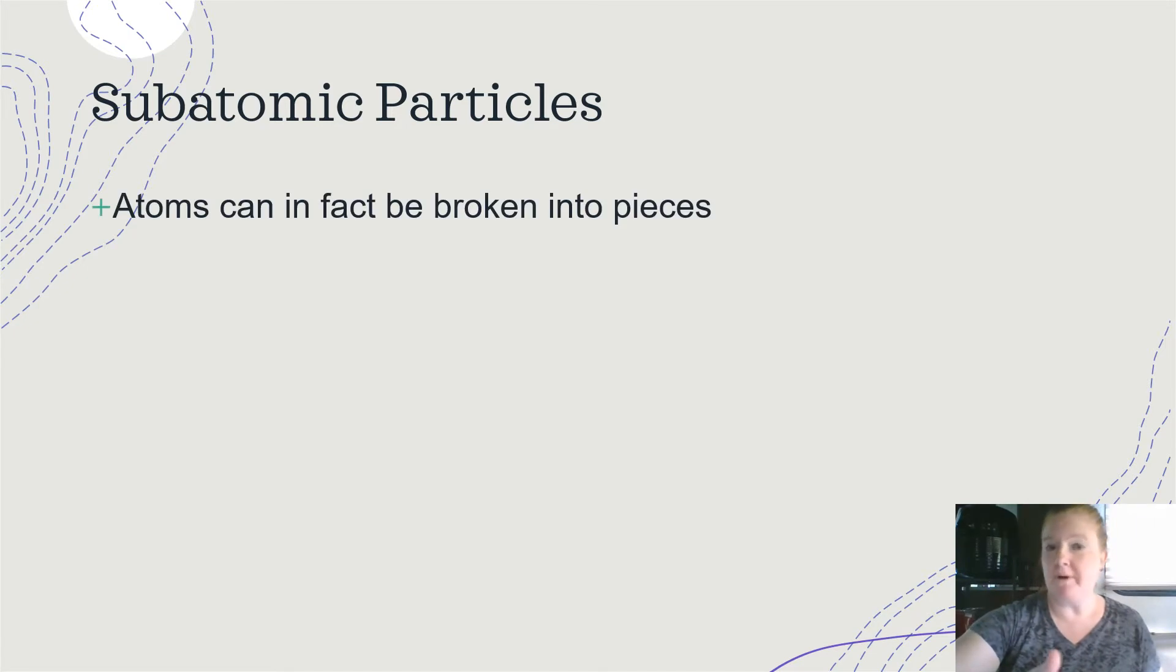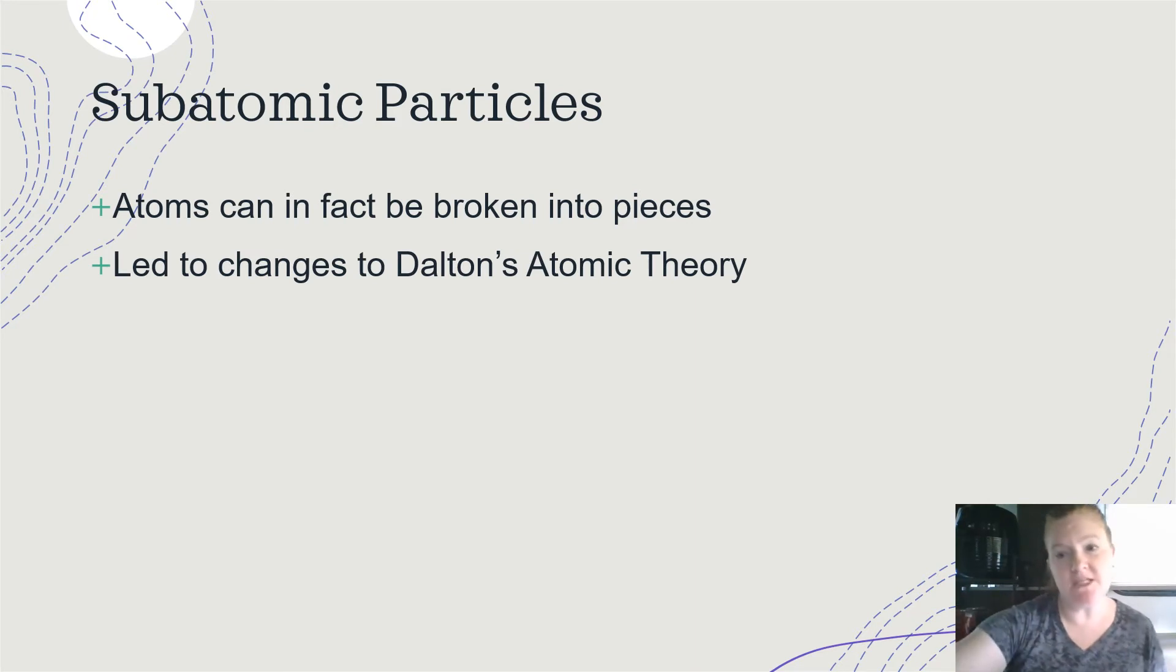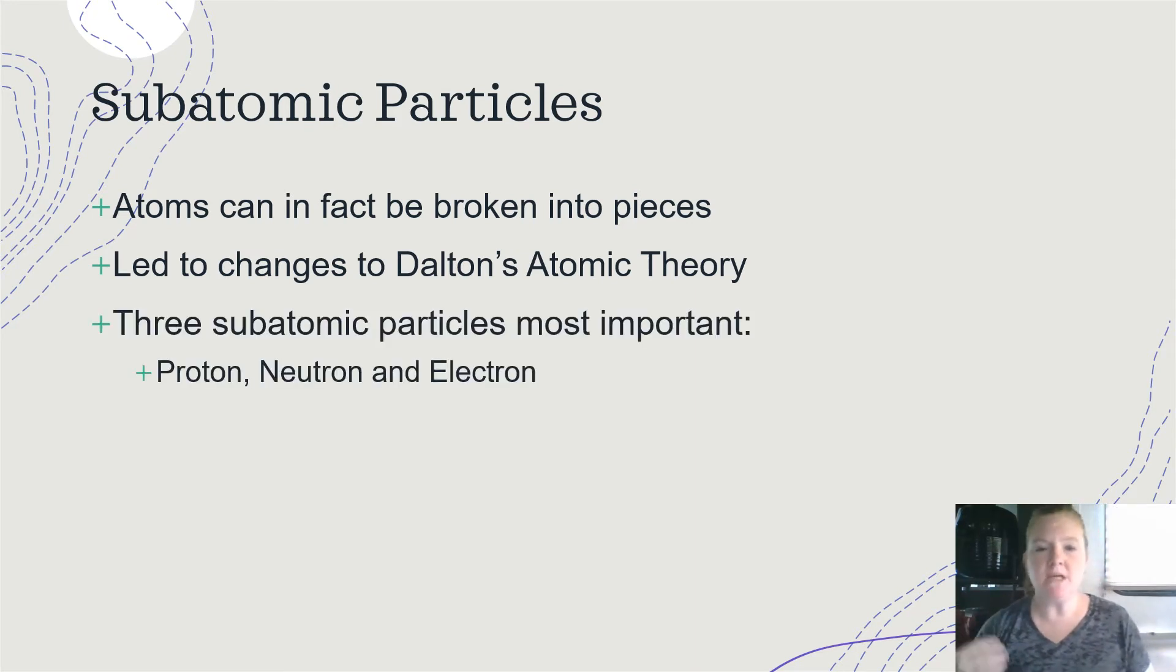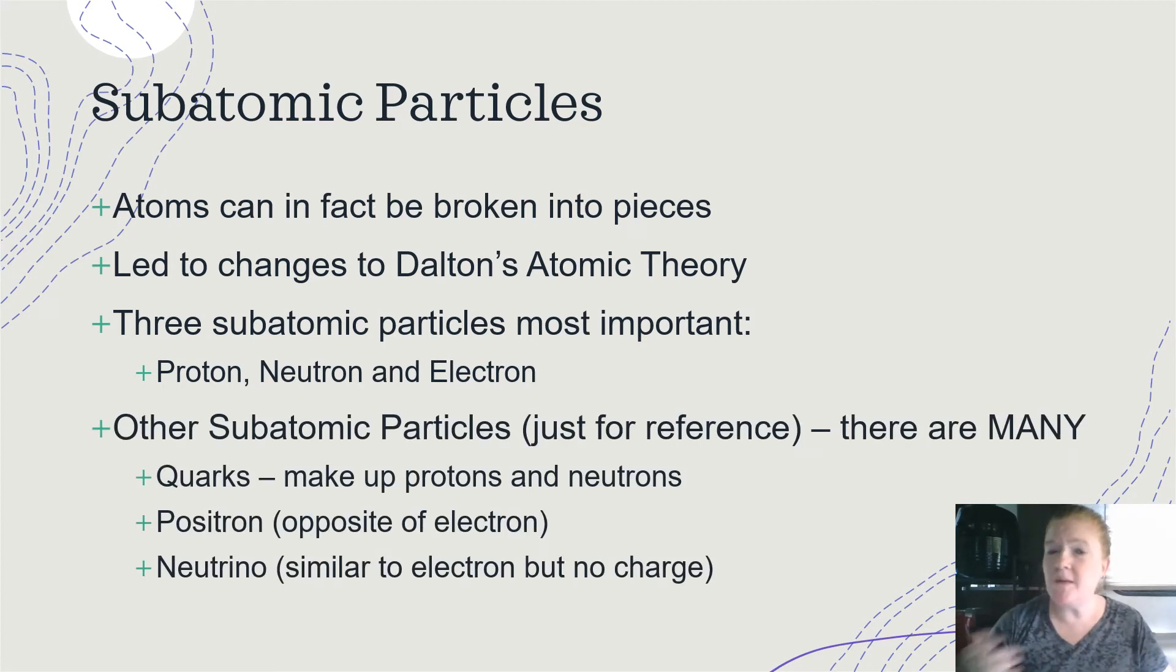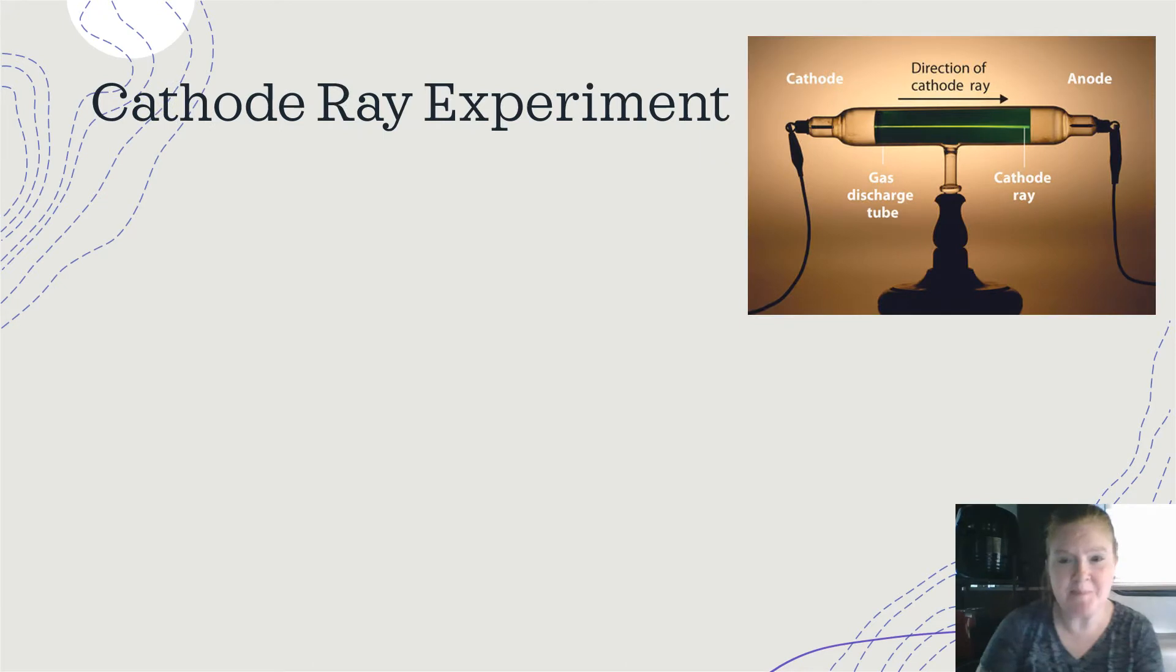Now, subatomic particles. Atoms can, in fact, be broken into pieces. This led to changes in Dalton's atomic theory. The three subatomic particles that are most important that we will focus on primarily in this course, proton, neutron, electron. There are other subatomic particles, so just for reference, there are many. So quarks make up protons and neutrons. A positron, which we will talk about when we do nuclear chemistry, but it's the opposite of an electron. So same mass, opposite charge. And then a neutrino, it's similar to an electron, but no charge.